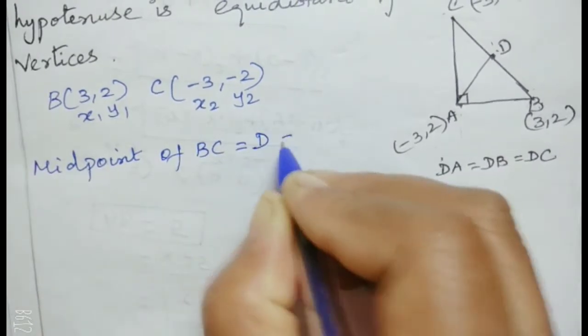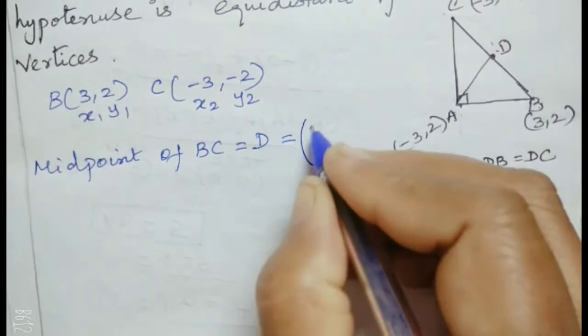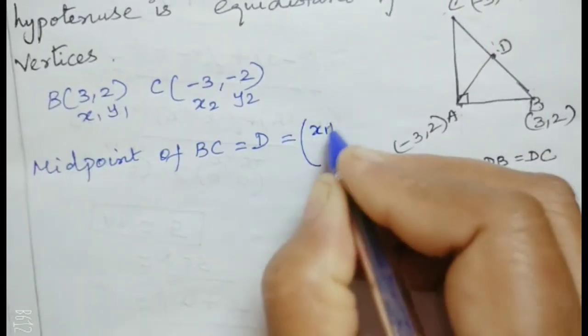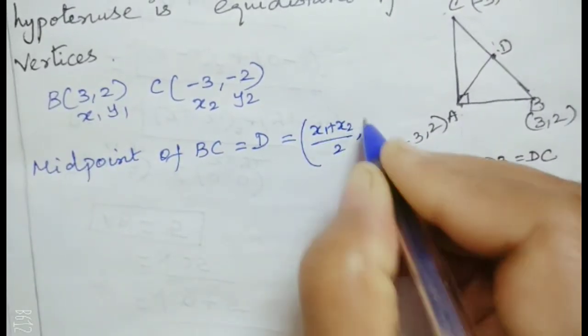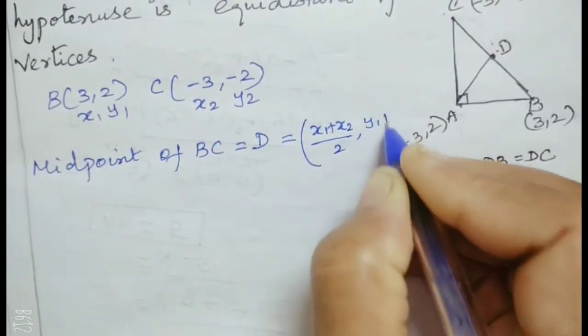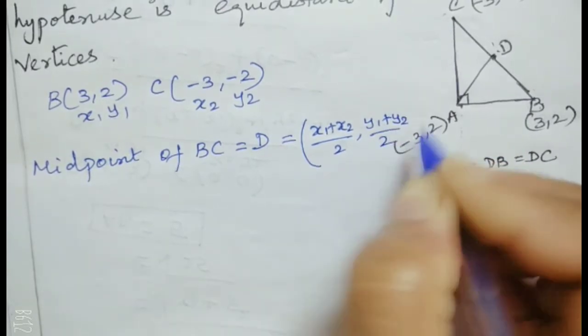For hypotenuse BC, the midpoint D is found using the midpoint formula: x1 plus x2 divided by 2, y1 plus y2 divided by 2.